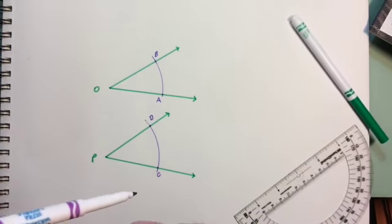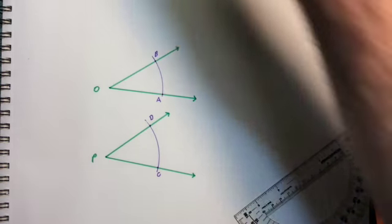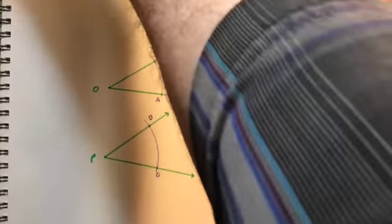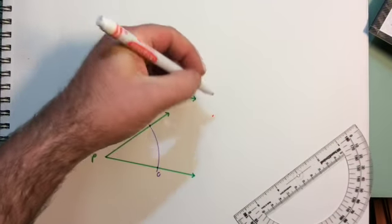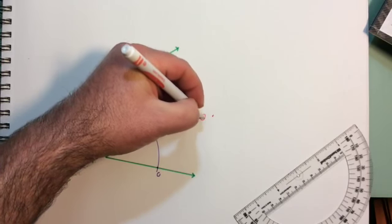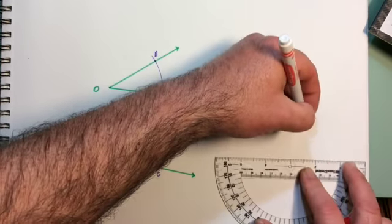Now I'm going to add those two angles together. I am going to create a third angle and we will label this point Q. I'm going to start by creating a baseline.